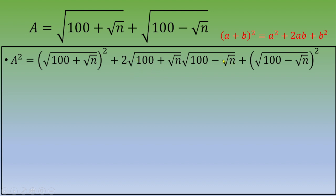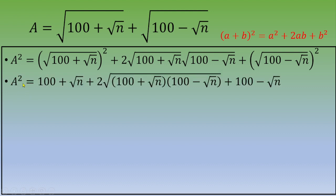Each squared square root simplifies directly, so we get a² = (100 + √n) + 2·√((100 + √n)(100 − √n)) + (100 − √n). Focusing on the product inside the square root, we have (100 + √n)(100 − √n).